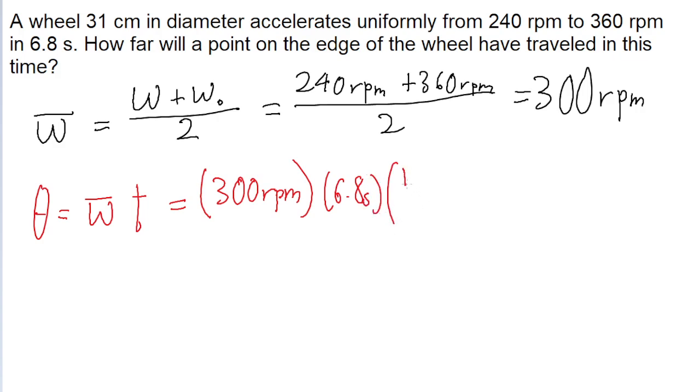So there are 60 seconds in one minute, so one minute per 60 seconds, so that the second units cancel out and now the minutes are consistent with each other. And this gives us an angle of 34 revolutions.